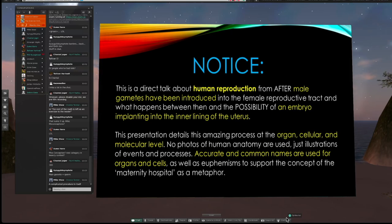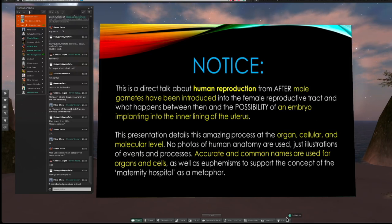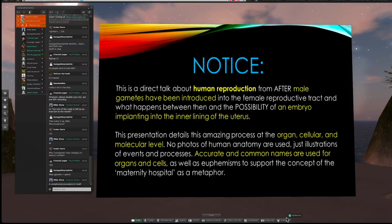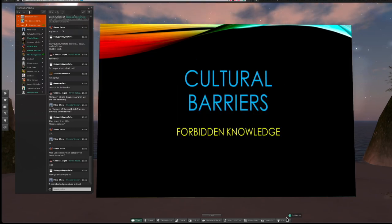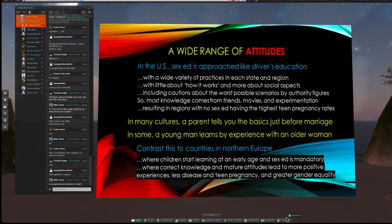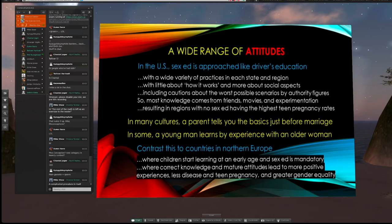I'm going to use accurate terminology — male gamete versus sperm versus common names. I was going to give an entire metaphor for the process, but I ran out of time. First, let's take a look at cultural barriers — the reason why we may not all know this ourselves. It's basically forbidden knowledge. These slides are very dense, so I'll talk through them rather than having you read everything.